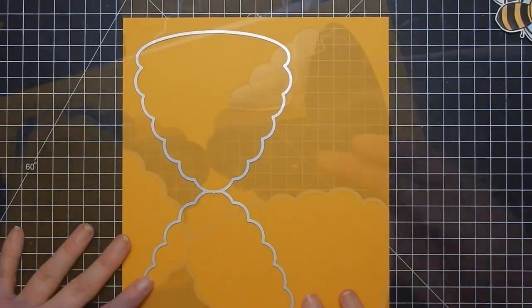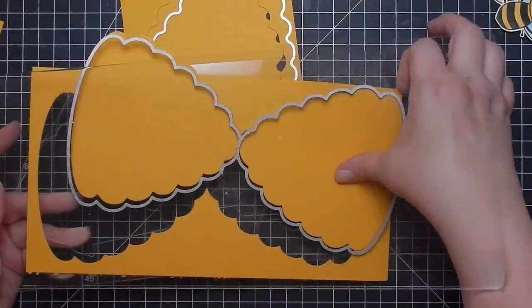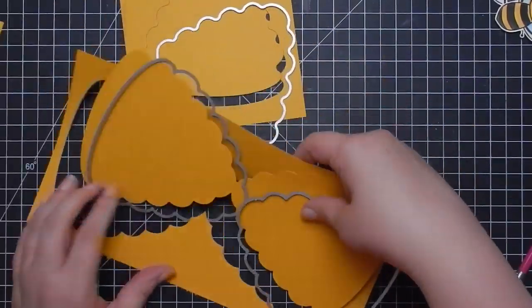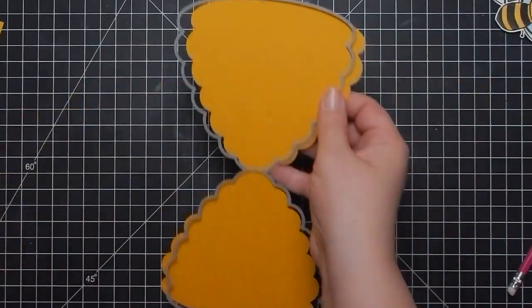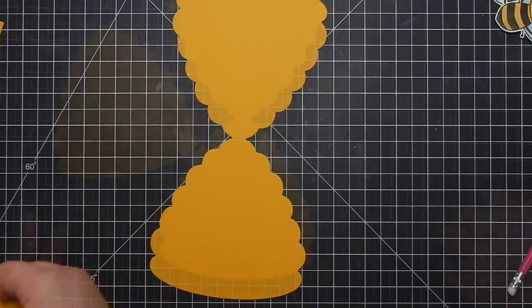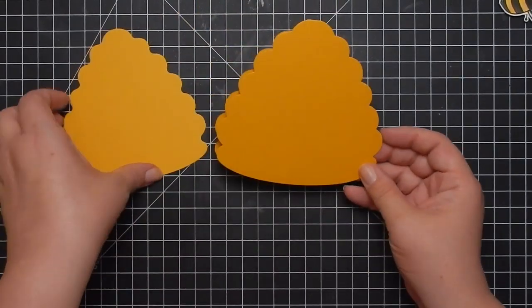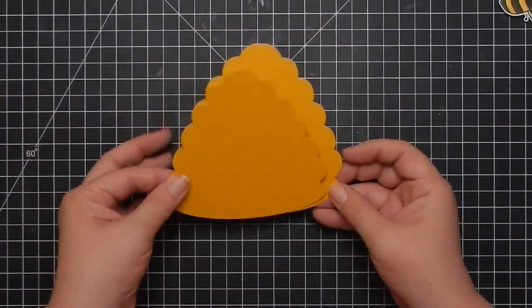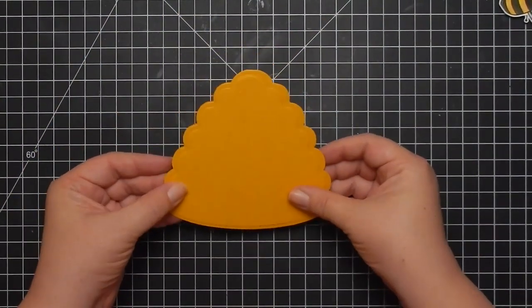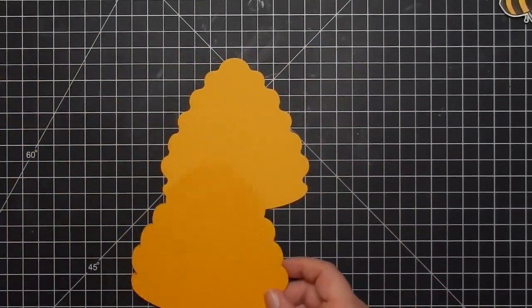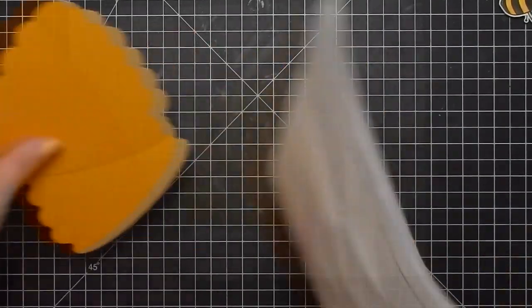We are going to be using Wild Honey and Gathered Twigs Distress Oxide ink, and this is Stampin' Up Crushed Curry cardstock. I'm die cutting all my pieces - my card panel and my card base. You do need the extended plates if you have a Big Shot.